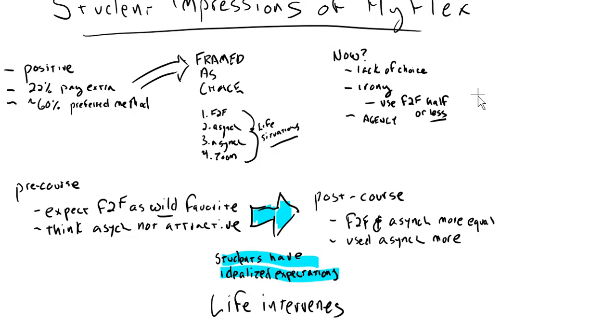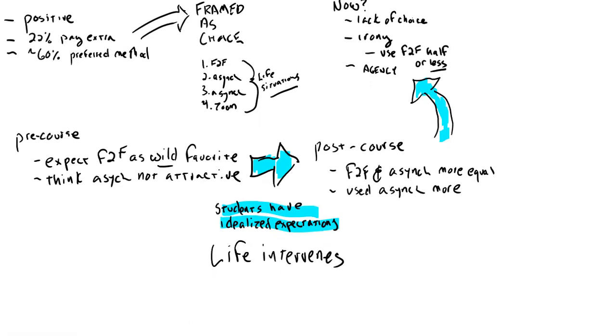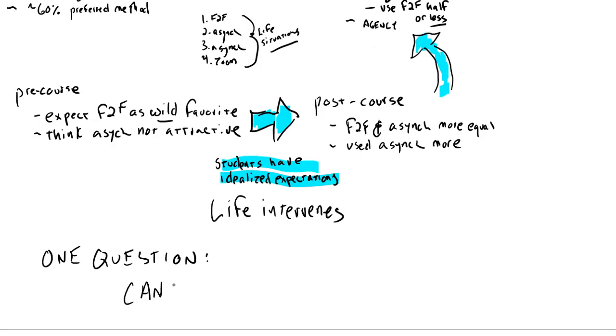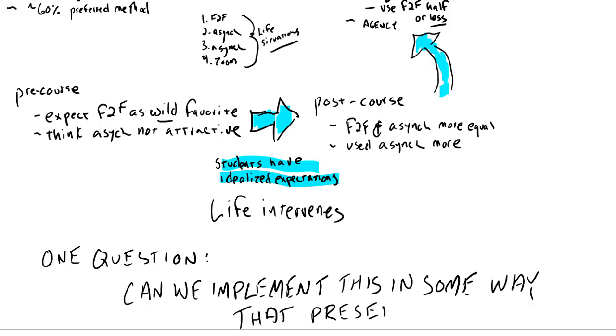So I guess that leads me to one question to think about and that I'd like to discuss maybe in the Zoom session that we have next week. The question would be, how do we—it'll take me a while to write this out here. Questions about giving the students a sense of agency, making them feel like this is not something completely forced on them. But can we implement this in a way, in some way, which preserves some of that sense of agency that students have with normal HyFlex?